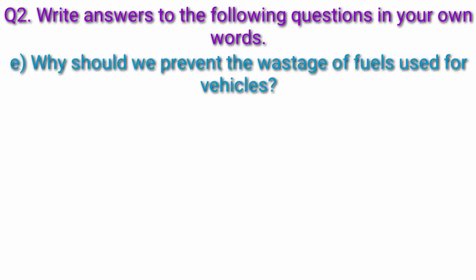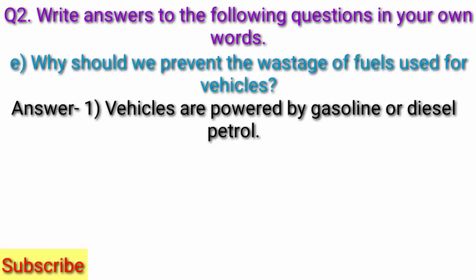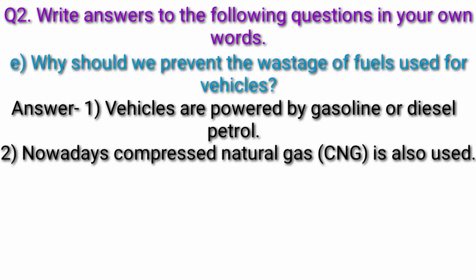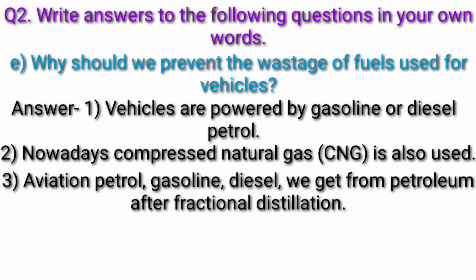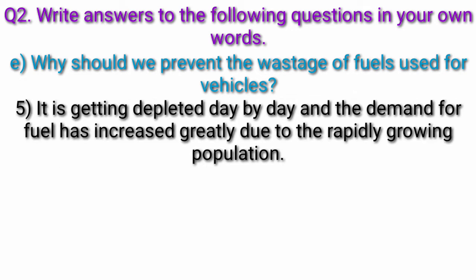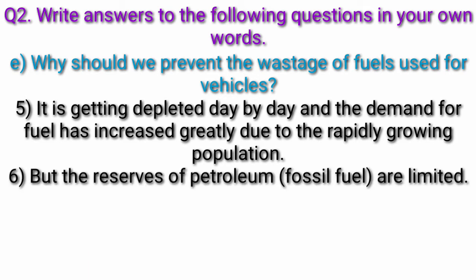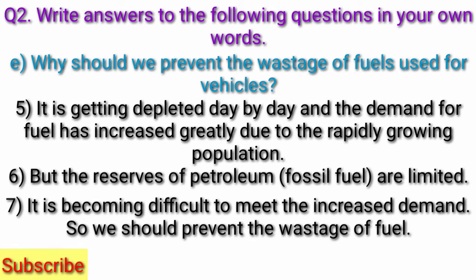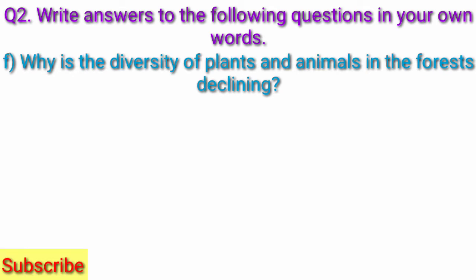Question e) Why should we prevent the wastage of fuels used for vehicles? Answer: Vehicles are powered by gasoline or diesel; nowadays compressed natural gas (CNG) is also used. Aviation petrol, gasoline, and diesel are obtained from petroleum after fractional distillation. Petroleum is a non-renewable source of energy. It is getting depleted day by day, and the demand for fuel has greatly increased due to rapidly growing population. But the reserves of petroleum are limited, so we should prevent the wastage of fuel.